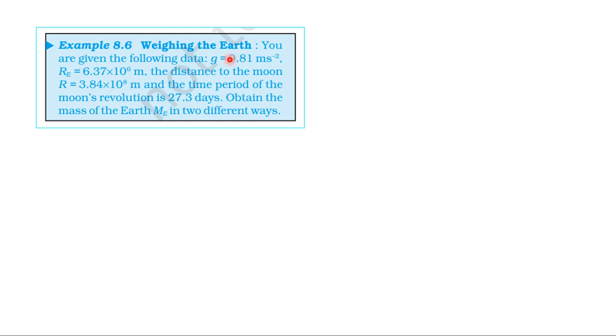The acceleration due to gravity on the earth's surface is 9.81. Radius of the earth is 6.37 × 10^6 meters. Distance of the moon from the earth is 3.84 × 10^8 meters. The time period of the moon's revolution is 27.3 days. We need to find the mass of the earth using two different methods.